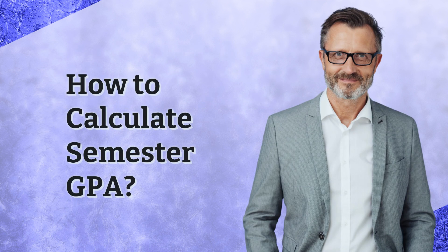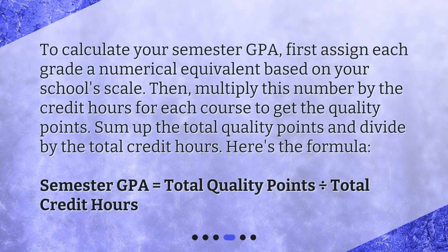How to calculate semester GPA? To calculate your semester GPA, first assign each grade a numerical equivalent based on your school's scale. Then multiply this number by the credit hours for each course to get the quality points. Sum up the total quality points and divide by the total credit hours. Here's the formula: Semester GPA equals total quality points divided by total credit hours.